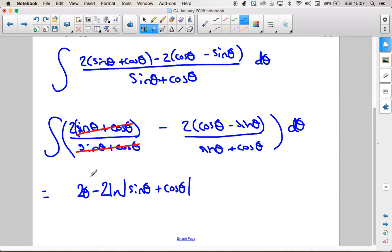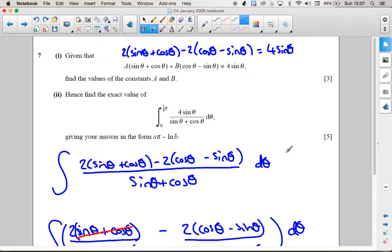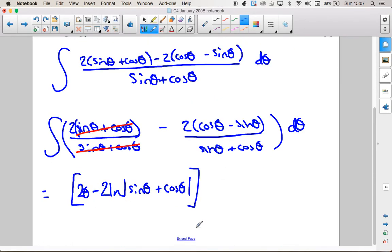So integrate this 2, we get 2 theta. Integrate all this, we get minus 2 ln of the bottom. So that's what I've written there. Sorry, I got a bit carried away. That's between 0 and pi over 4.